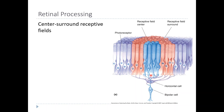Because of horizontal cells or connections between bipolar cells, the actual receptive field of a bipolar cell is a little more complicated. Horizontal cells get their input from photoreceptors and then send their output to bipolar cells. That means the bipolar cell has sort of two receptive fields: one where it gets direct input from photoreceptors, called the center of the receptive field, and another where cells communicate indirectly through the horizontal cell, called the surround.